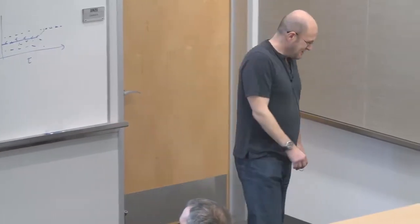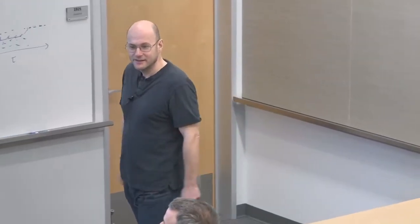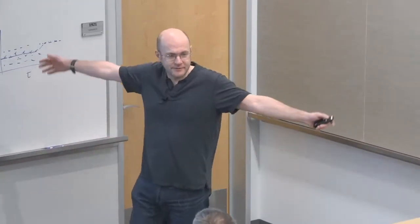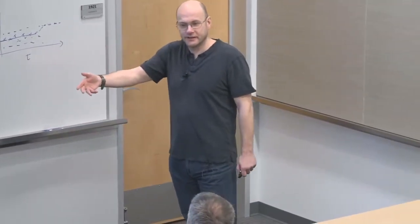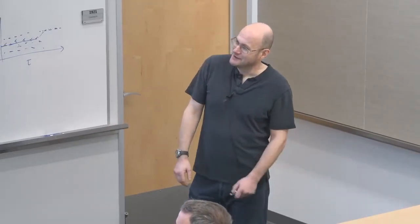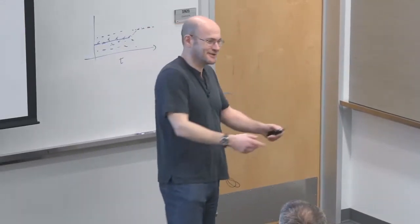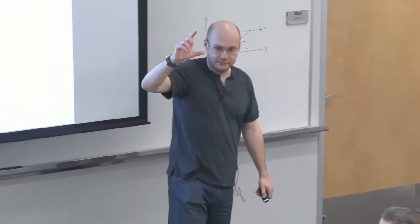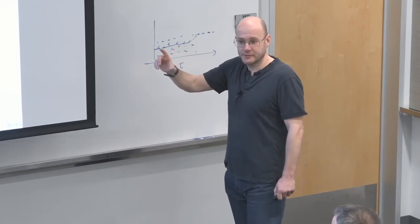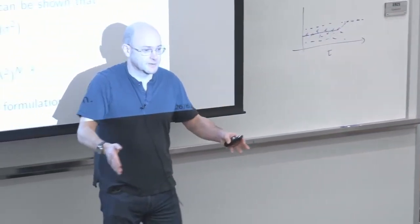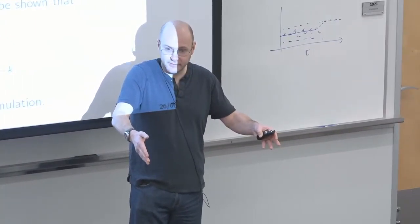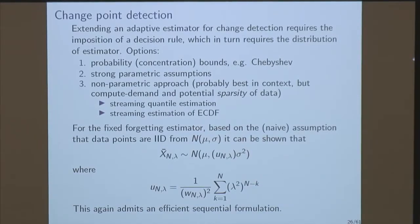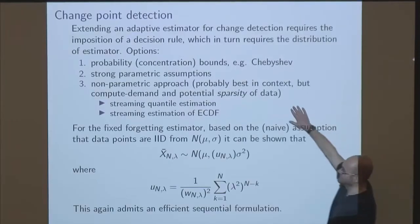The popular approach in machine learning is to use concentration bounds — you can always write down such a bound. Our experiments said it was too wide. The next thing, the roguish statistical thing, is to say the whole change detection literature is based on Gaussian, so let's talk about Gaussian, and then everything drops out quite nicely. The thing we're working on now is estimating that distribution directly using non-parametric streaming methods: either choosing some quantiles to monitor with a representation of the empirical CDF, or directly estimating the CDF.